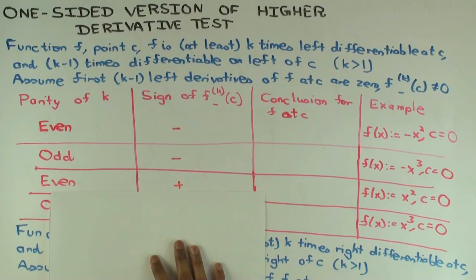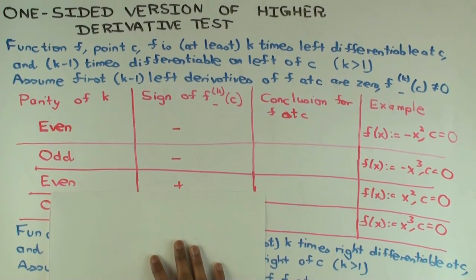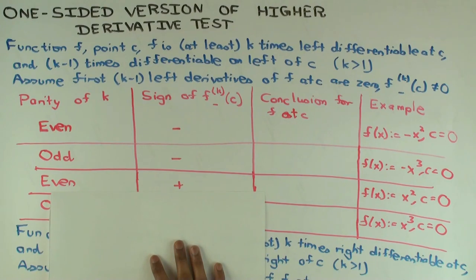In this talk, I'm going to consider a one-sided version of the higher-derivative test. The idea is that this will actually explain why the higher-derivative test works the way it does, and it will actually show something slightly stronger.